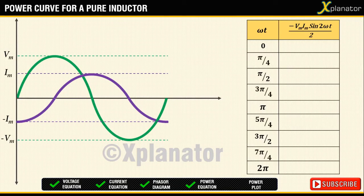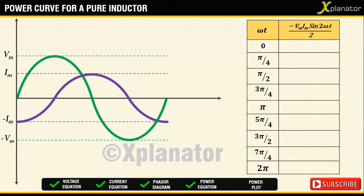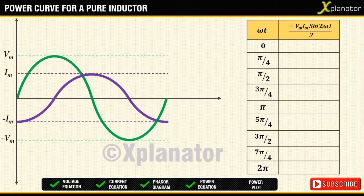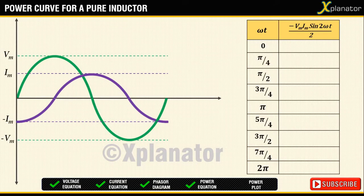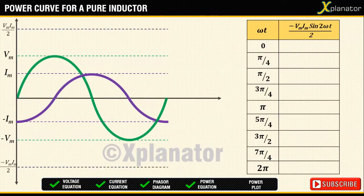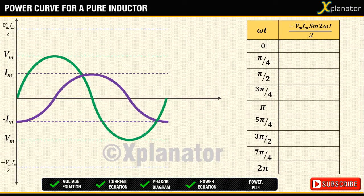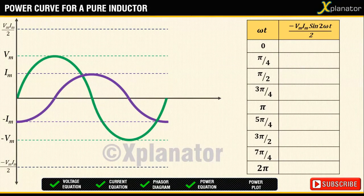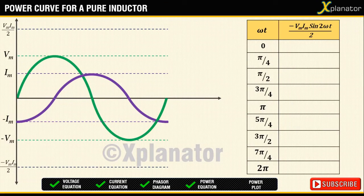So consider some more points like π by 4, 3π by 4, 5π by 4 and 7π by 4. The plot has a highest magnitude of VmIm upon 2 and a lowest magnitude of minus VmIm upon 2. Draw the waveform with this new data.